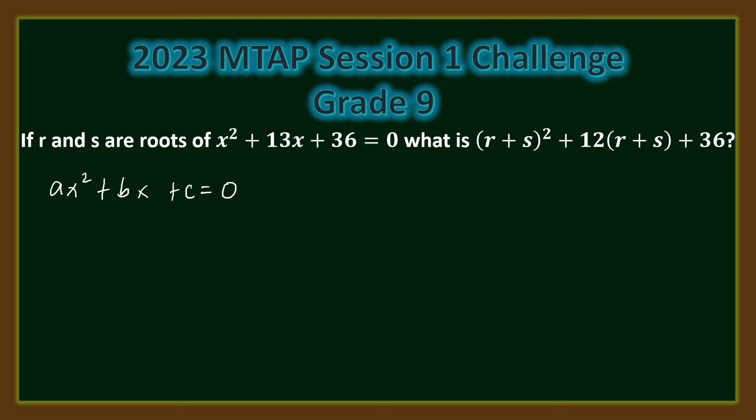where a, b, and c are real numbers, then the sum of the roots r and s is equal to negative b over a. Also, the product of the roots rs is equal to c over a.